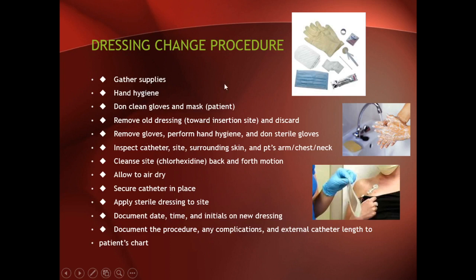Dressing change procedure: gather supplies, perform hand hygiene, use clean gloves and masks, remove all existing dressings, then use sterile gloves. Inspect the catheter site and surrounding skin before cleansing. Allow the site to dry. Secure the catheter in place, apply a sterile dressing, and document the date, time, and initials on the new dressing. Document the procedure. If any complications or changes in external catheter length are noted, consider replacing the catheter or initiating further procedures.